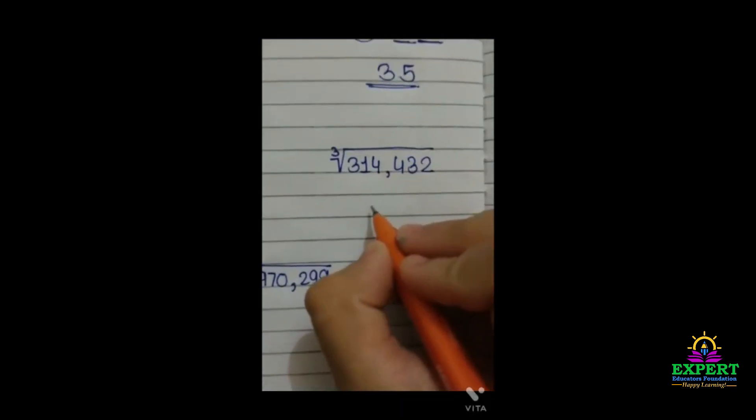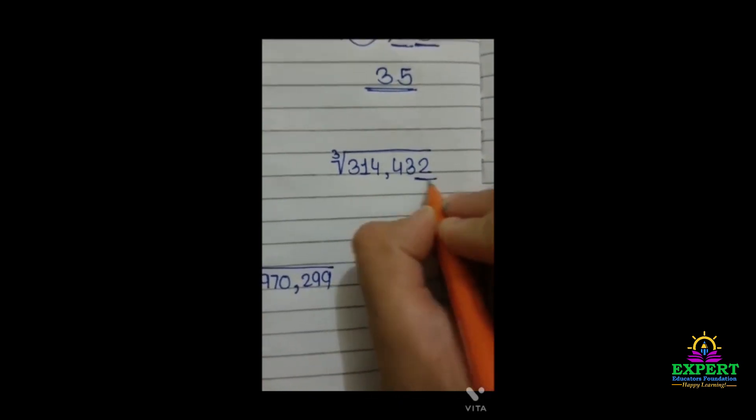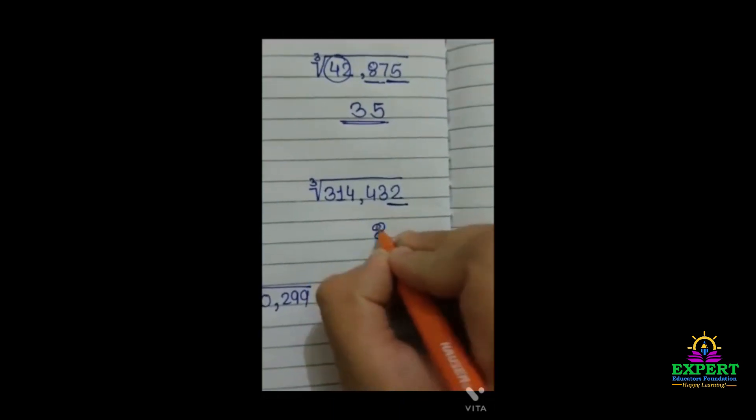Now let's solve this. We will take the last digit. The last digit is 2. The 2 is considered as 8. So we will write here 8.